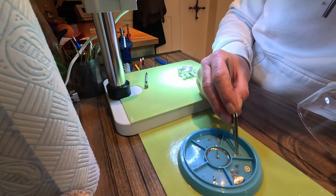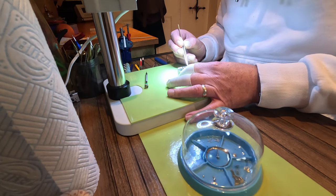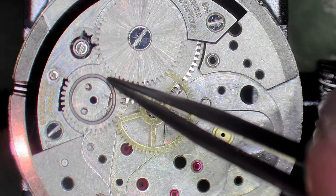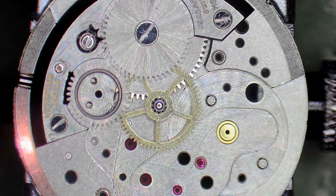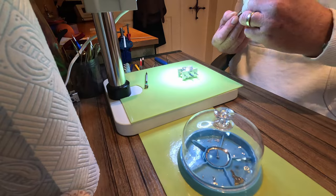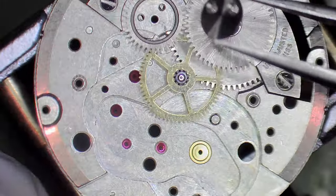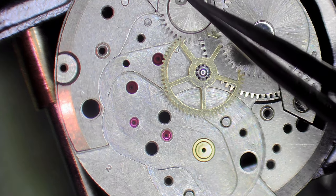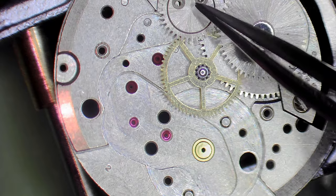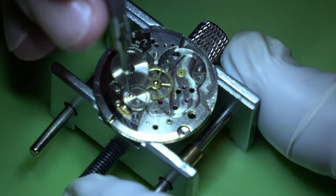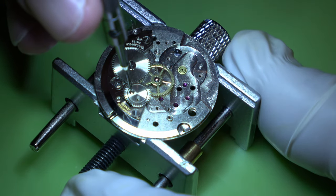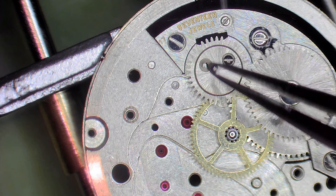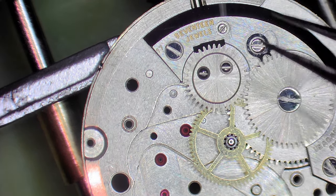Then we can put the ratchet wheel onto the barrel. Make sure things are running freely. We can put in the reversing wheel. Now on a lot of watches this reversing wheel will only have one screw and usually it's a left hand threaded screw. So to undo it you turn it the do up way and to do it up you turn it the opposite way. It can catch you out and you can break the head off it. But I do much prefer this design with the two screws.